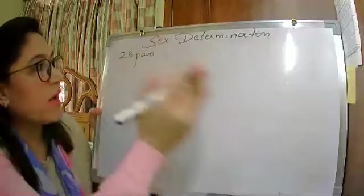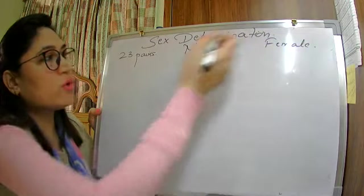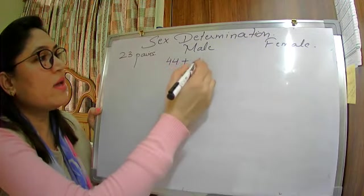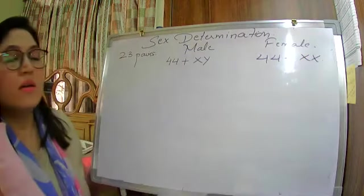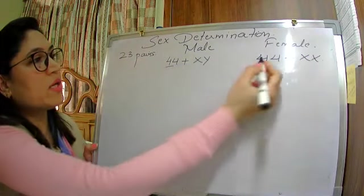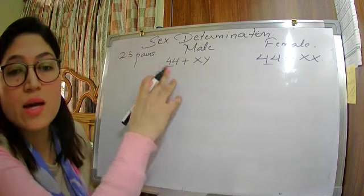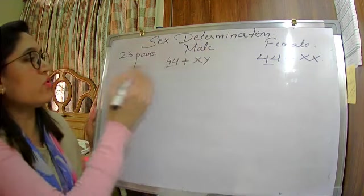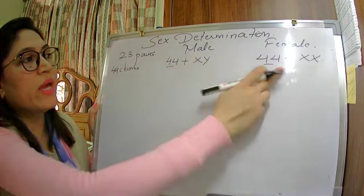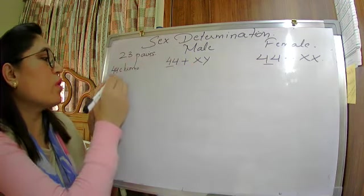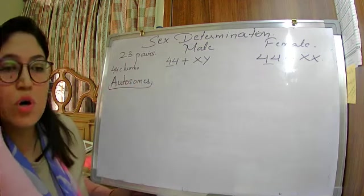If you segregate by male and female: in males we have 44 + XY, and in females we have 44 + XX. The 44 chromosomes which are the same in both male and female — same in size and shape — we call them autosomes, and we call them homologous.